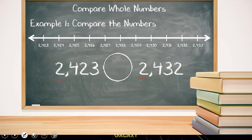If we look at the next place value, the hundreds place, both numbers also have four hundreds. So let's check out the tens place. One's in the twenties and one's in the thirties. So if we place them on the number line, 2,423 would be less than 2,432. All right.